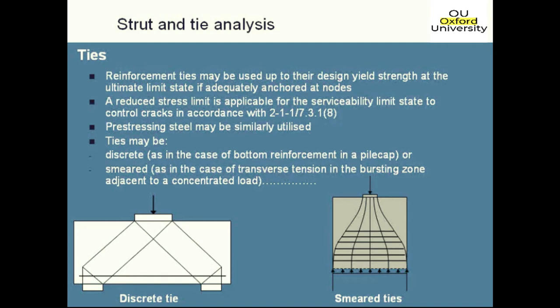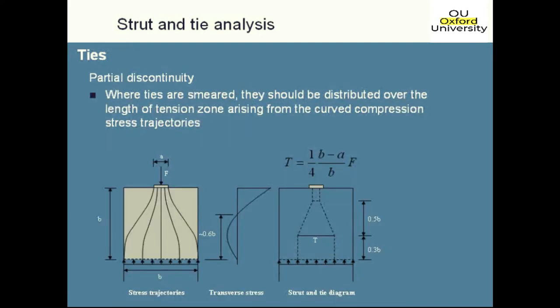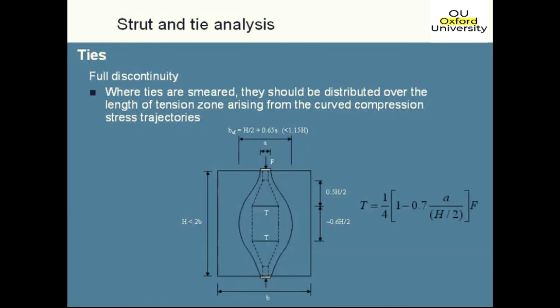For a bursting situation where the flow of forces deviates over a considerable height but is idealized as a single tie at the centre of the tension zone, you shouldn't place one discrete tie there. Since tension exists over a significant height, you should distribute reinforcement over the whole tension zone — in this case 60% of the section depth. The Eurocode calls this a partial discontinuity and provides a formula: the tension is T = ¼ × (B - A)/B × F, used for sizing bursting steel in a primary prism.